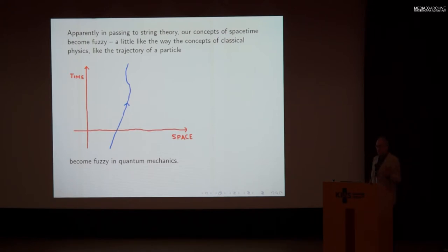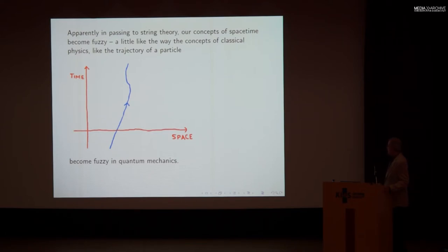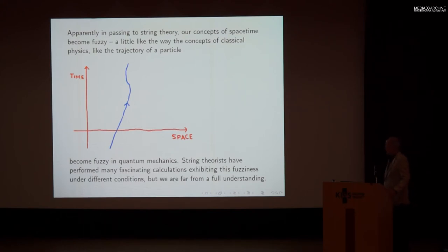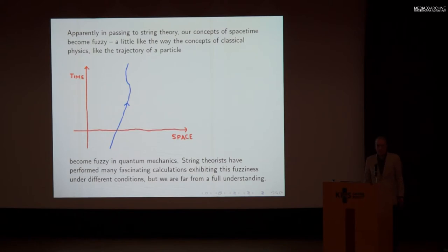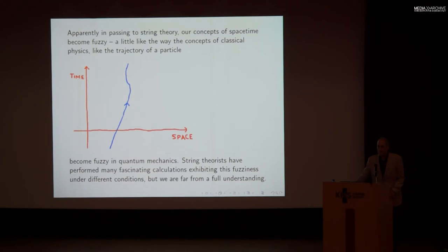In passing to quantum mechanics, the trajectory of a particle becomes fuzzy. And apparently, in passing to string theory, our concepts of space-time similarly become fuzzy — a little like what happens to the concepts of classical physics in the context of quantum mechanics. String theorists have performed many fascinating calculations exhibiting this fuzziness under different conditions, but we are far from a full understanding. The rate of progress is sufficiently slow that I suspect even the younger students here today will have the opportunity to participate in understanding this, if you choose to go in that direction.